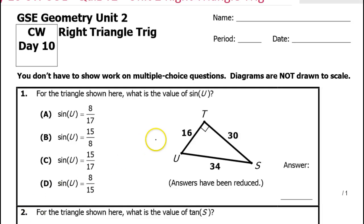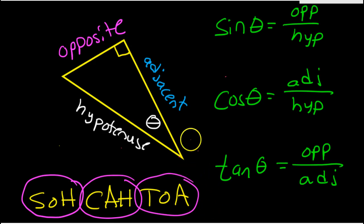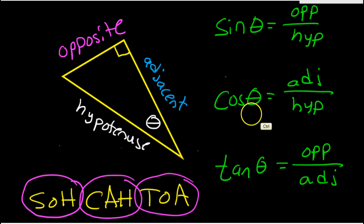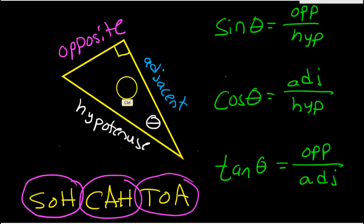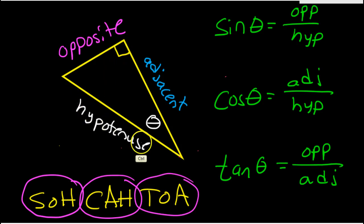In this video we will solve a variety of problems involving sine, cosine, and tangent. These are the definitions of sine, cosine, and tangent — you need to know them. They all apply to a right triangle. In a right triangle, across from the 90-degree angle is always the hypotenuse.